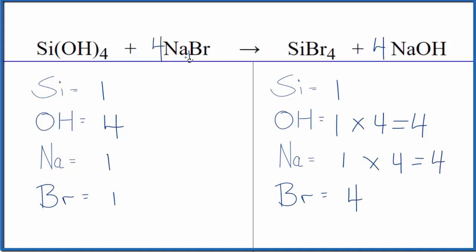We just put a 4 right here. 1 times 4, that'll give us 4. And then for the bromine, 1 times 4, that'll give us 4. And we're done.